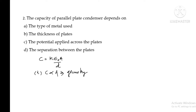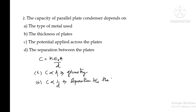Capacitance is directly proportional — that means it depends on the geometry, that is the shape and size of the capacitor. It is inversely proportional to the separation between the capacitor plates.